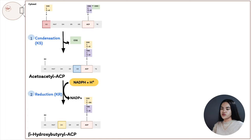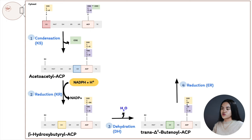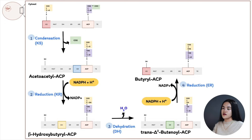Step three is a dehydration reaction: water is removed and a double bond is formed, producing trans-Δ2-butenoyl-ACP. This is catalyzed by beta-hydroxyacyl-ACP dehydratase (the DH domain). Step four is reduction of the double bond, with NADPH as the electron donor yielding NADP+, producing butyryl-ACP. This is catalyzed by enoyl-ACP reductase (ER). The double bond is now gone, the chain is saturated.